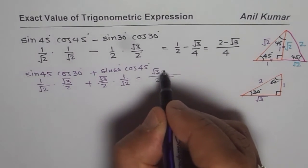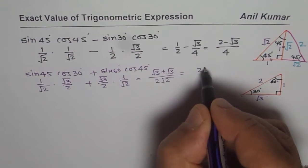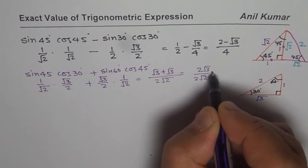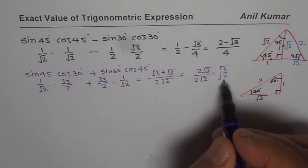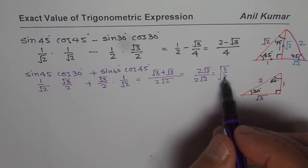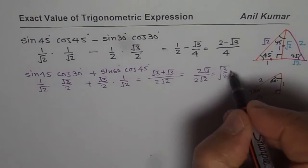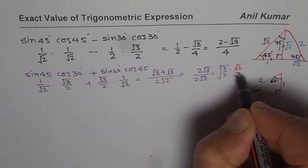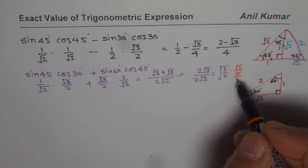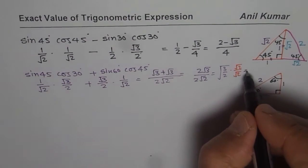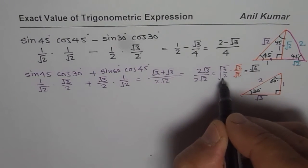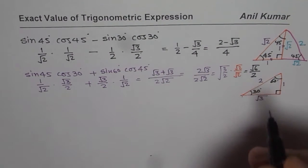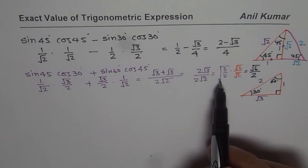The common denominator for both terms is 2 times square root 2. The numerators give square root 3 plus square root 3, which is 2 square root 3. So we get 2 square root 3 over 2 square root 2, which simplifies to square root 3 over square root 2. However, we should never leave a radical sign in the denominator, so we need to rationalize.